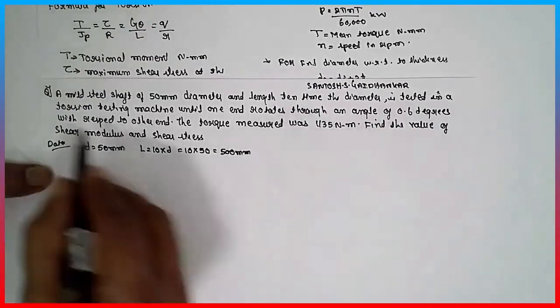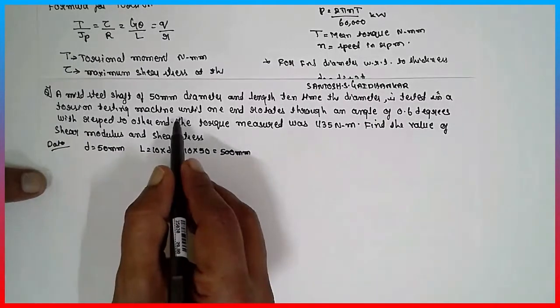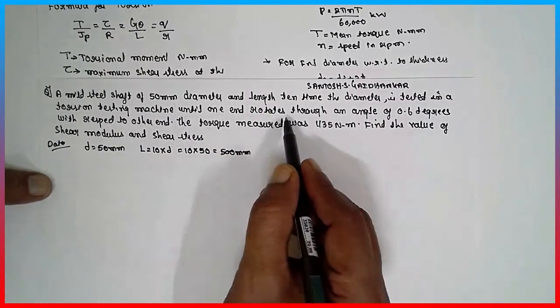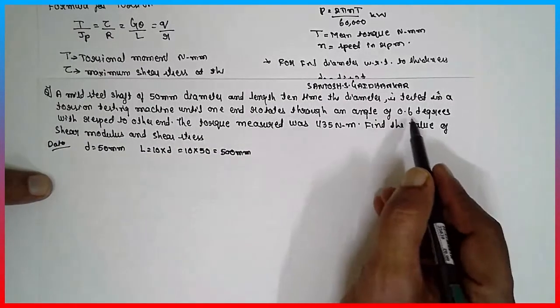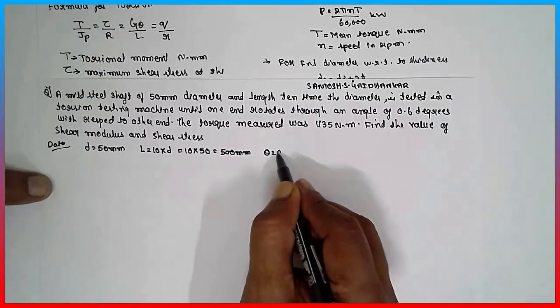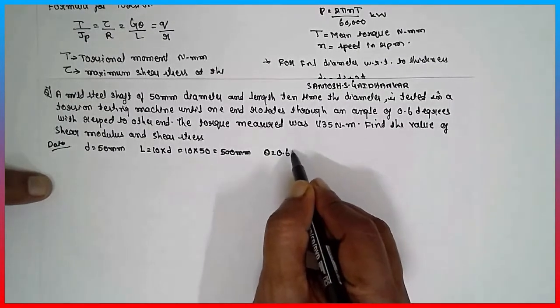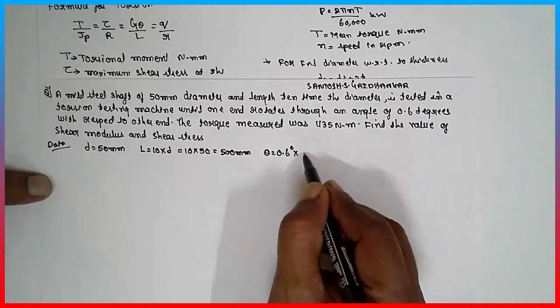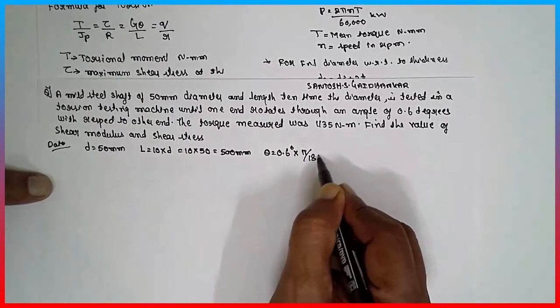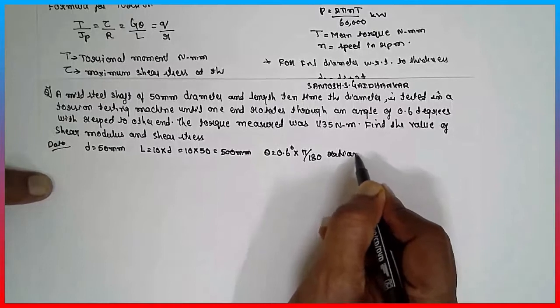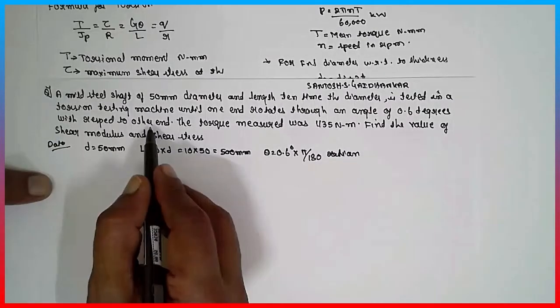It is tested in a torsion testing machine until one end rotates through an angle of theta equal to 0.6 degrees. It has to be converted into radians. Therefore, multiply by pi by 180, it will get converted into radians.